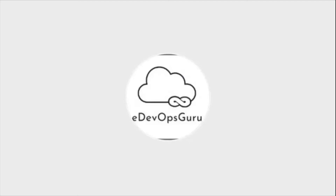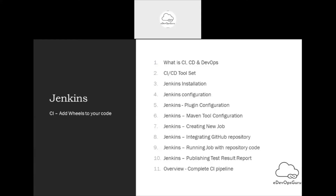Then we will talk about what are the different tools which are generally used in CI/CD. Then we will go through Jenkins installation and how to configure Jenkins. We'll cover different plugins which are normally used and do some hands-on installing tools like Maven. Then we will create a job which will do the complete CI — pull code from the repository, compile, do unit testing, generate test reports as well as code coverage reports. We will be using GitHub as a repository.